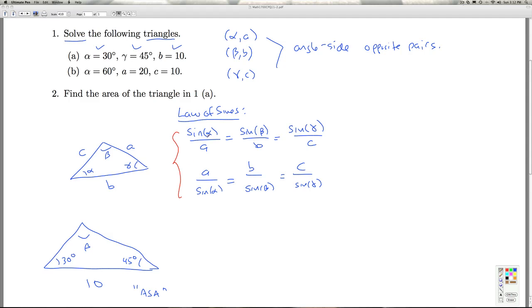And so in order to use the law of sines, I need to know the ratio of an angle side opposite pair. I don't have C or A, so our hope rests in finding beta. Since I have two angles in the triangle, I can quickly get the third.